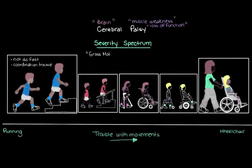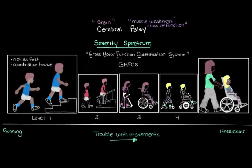What we're looking at here is something called the Gross Motor Function Classification System, or the GMFCS. Each of these pictures represents the different levels of the GMFCS. This system is a really useful way for characterizing the severity of someone's cerebral palsy, giving us a fairly standard way to assess a person's movement abilities or impairments.